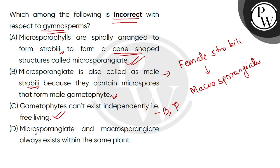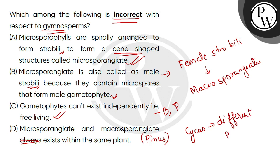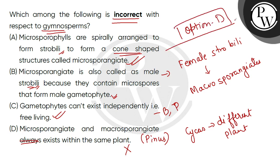Option D states that microsporangiate and macrosporangiate always exist within the same plant. This is not always true — in some cases like Pinus, they do exist on the same plant, but if we talk about other plants such as Cycas, the microsporangiate and macrosporangiate are on different plants. So this statement is wrong regarding gymnosperms. The incorrect statement is option D. Thank you, all the best.